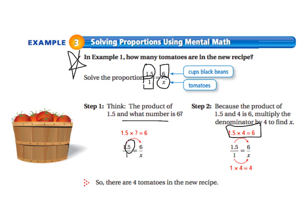And so we multiply the 1.5 times the 4 to get to the 6 and if we do that to the top of the fraction we have to do the same thing to the bottom and so 1 times 4 equals 4 so x equals 4. So there are 4 tomatoes in the new recipe.